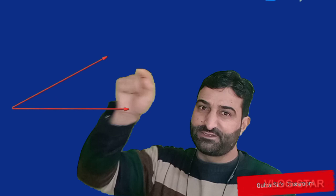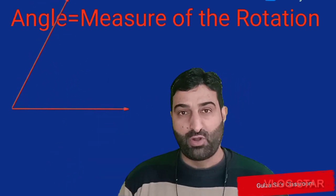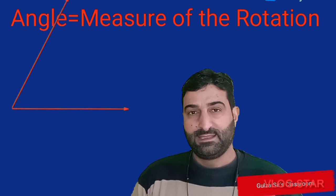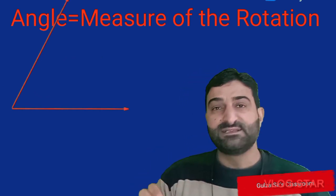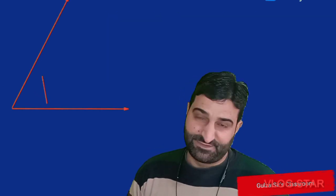If we take a ray and fix its initial point and then rotate the ray, the measure of this rotation is called an angle. The angles are measured in degrees. So this is the basic definition of angle.